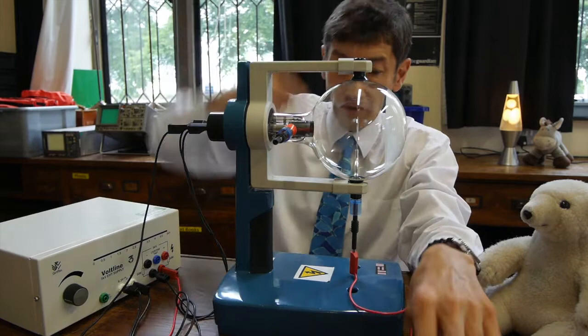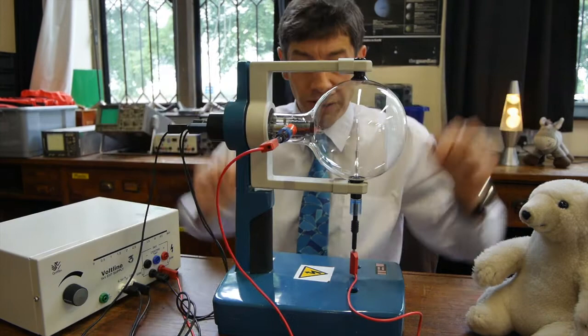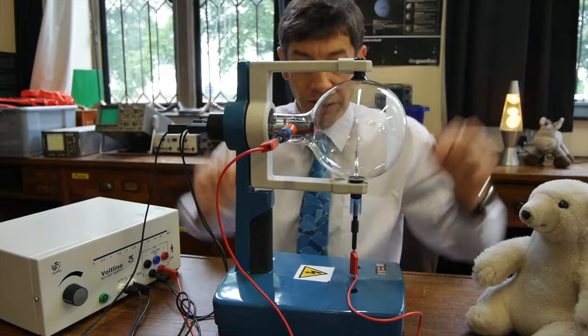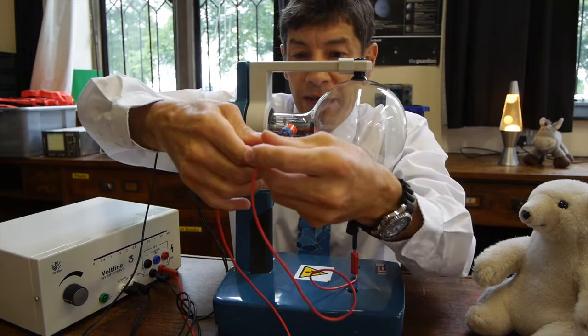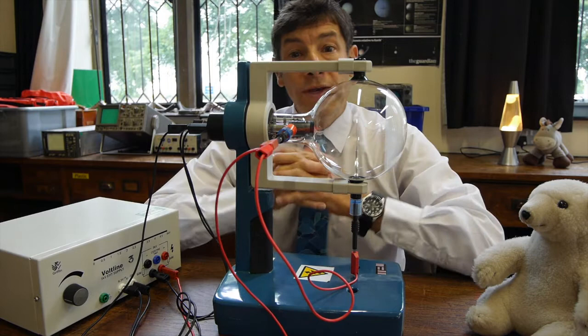And then we're going to make the front of the electron gun very positive. So that's the connection to the electron gun, which Crookes didn't have. And the Maltese cross is also going to be made very positive, too. So we've got everything wired up. All we need to do now is turn it on and see what happens.